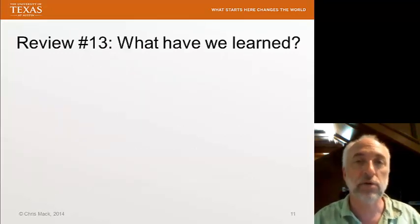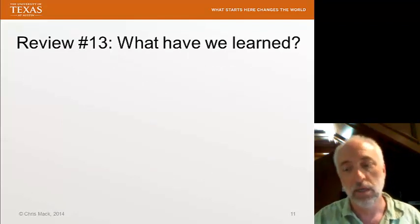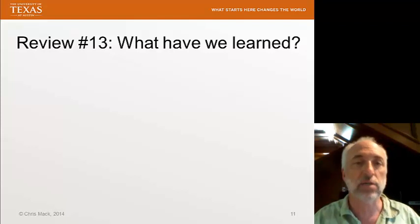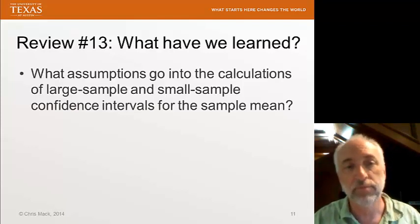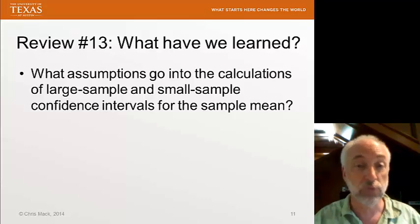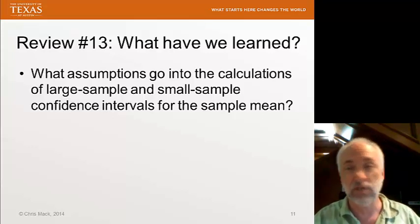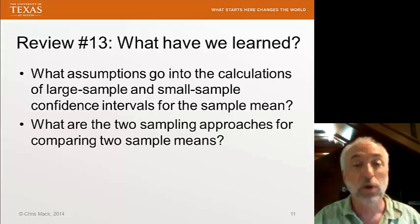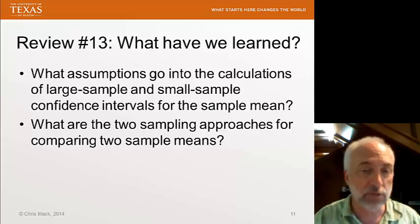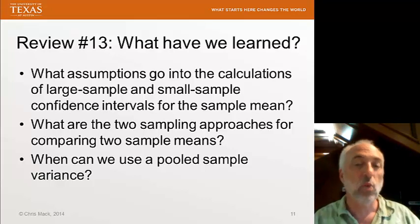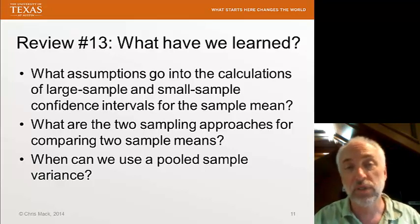All right, let's review what we learned here in lecture number 13. As always, you should be able to quickly and easily answer these questions. If not, you should go back and review the material. What assumptions go into the calculations of large sample and small sample confidence intervals for the sample mean? What are the two sampling approaches that we've discussed for comparing two sample means? And finally, when can we use a pooled sample variance?